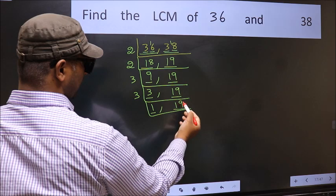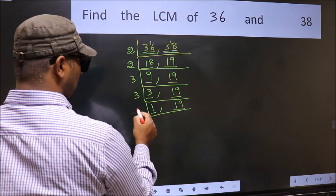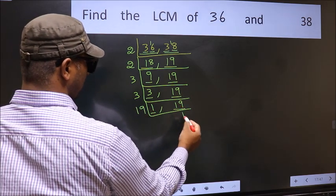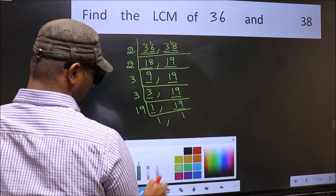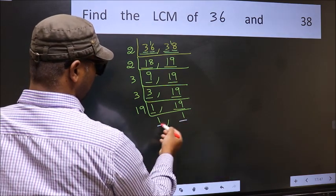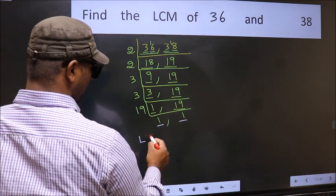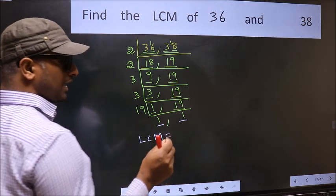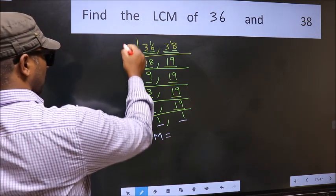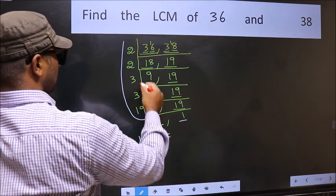Now we got 1 here, so focus on the other number 19. 19 is a prime number, so 19 once 19. So we got 1 in both the places. So our LCM is the product of these numbers.